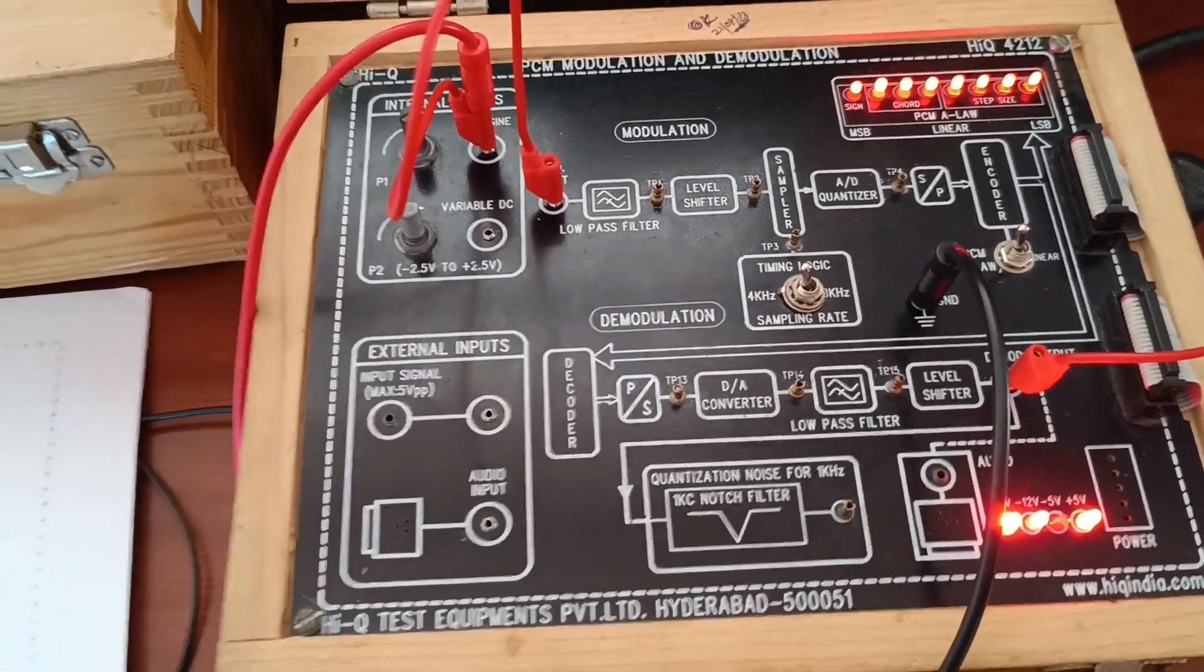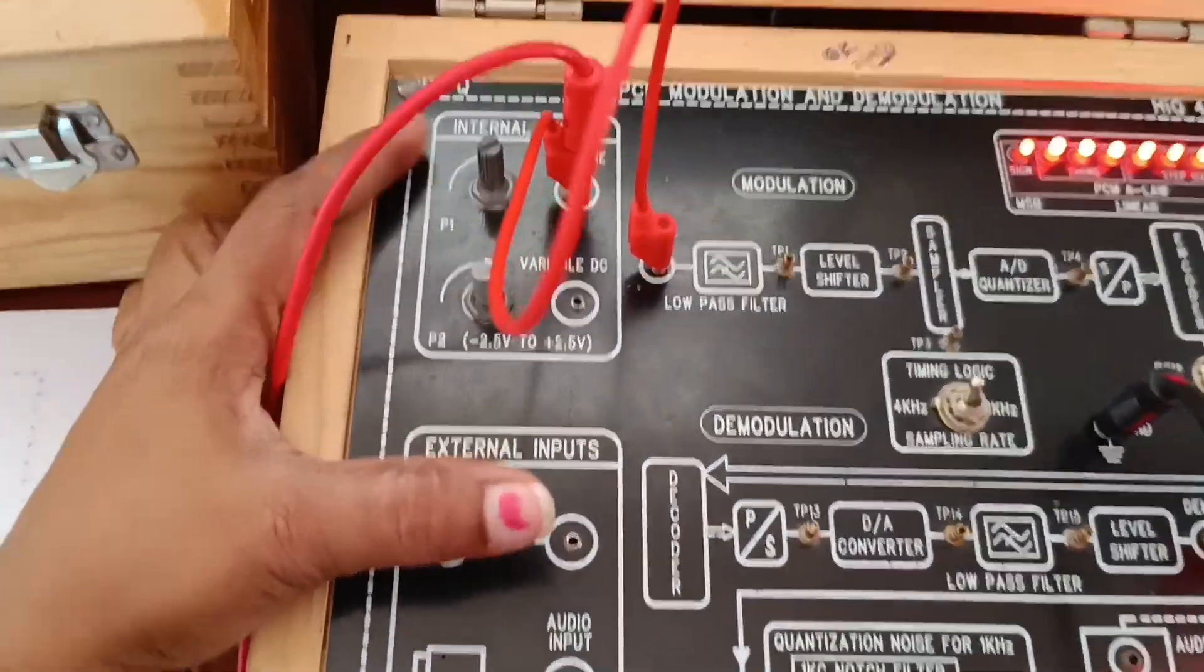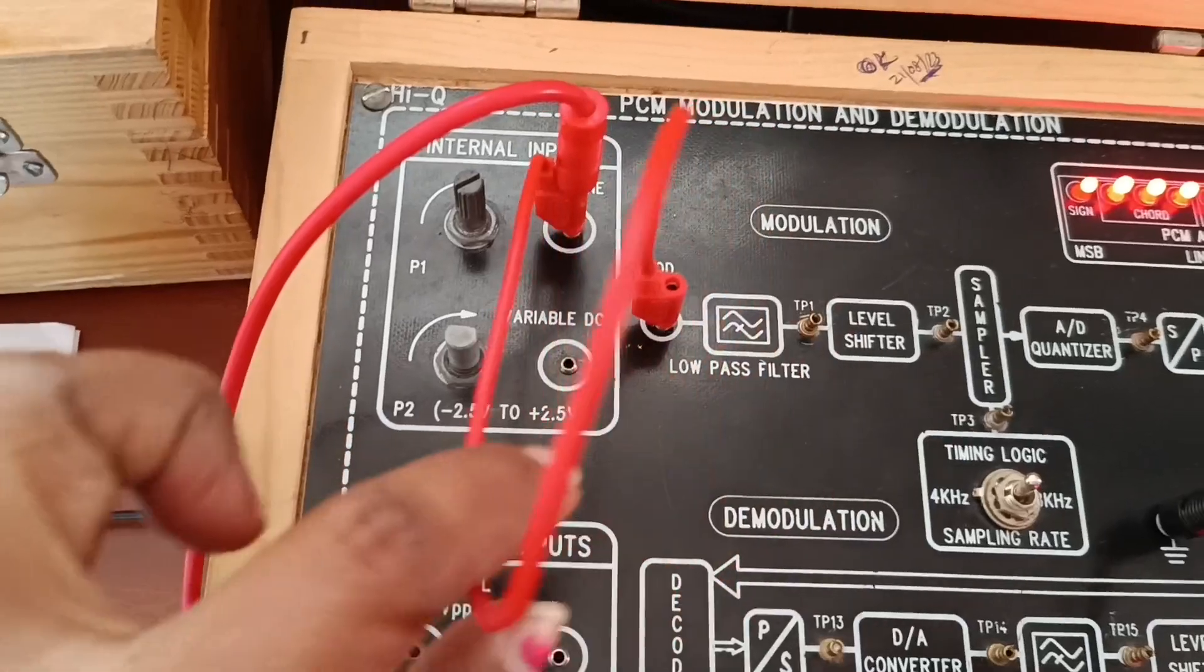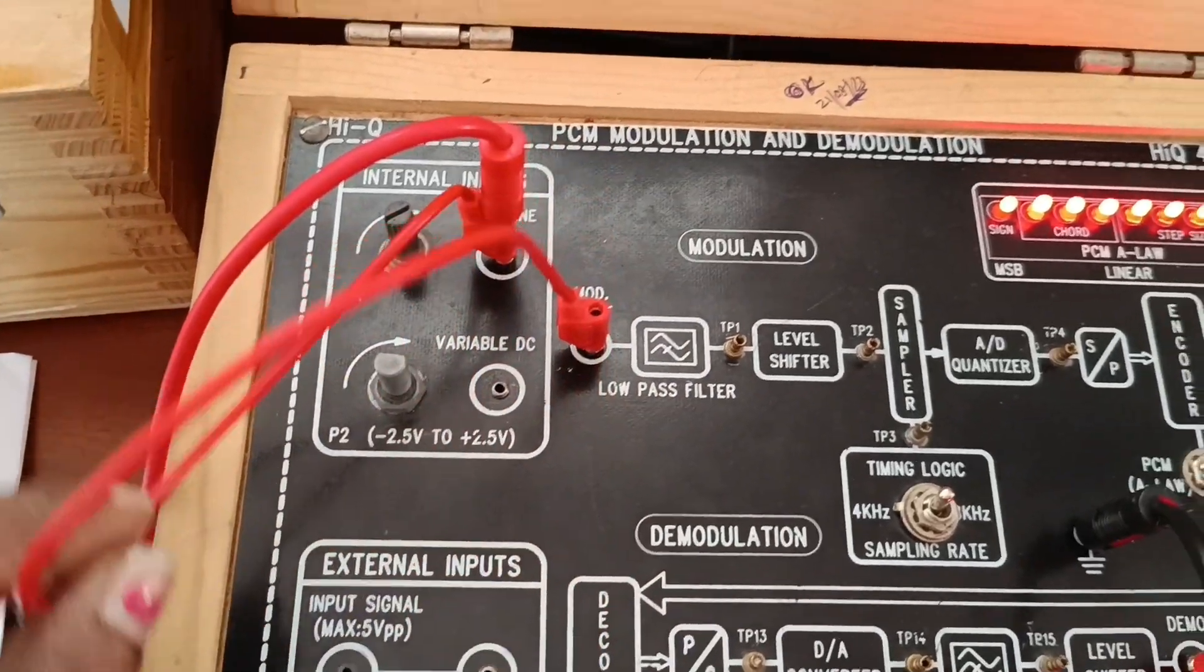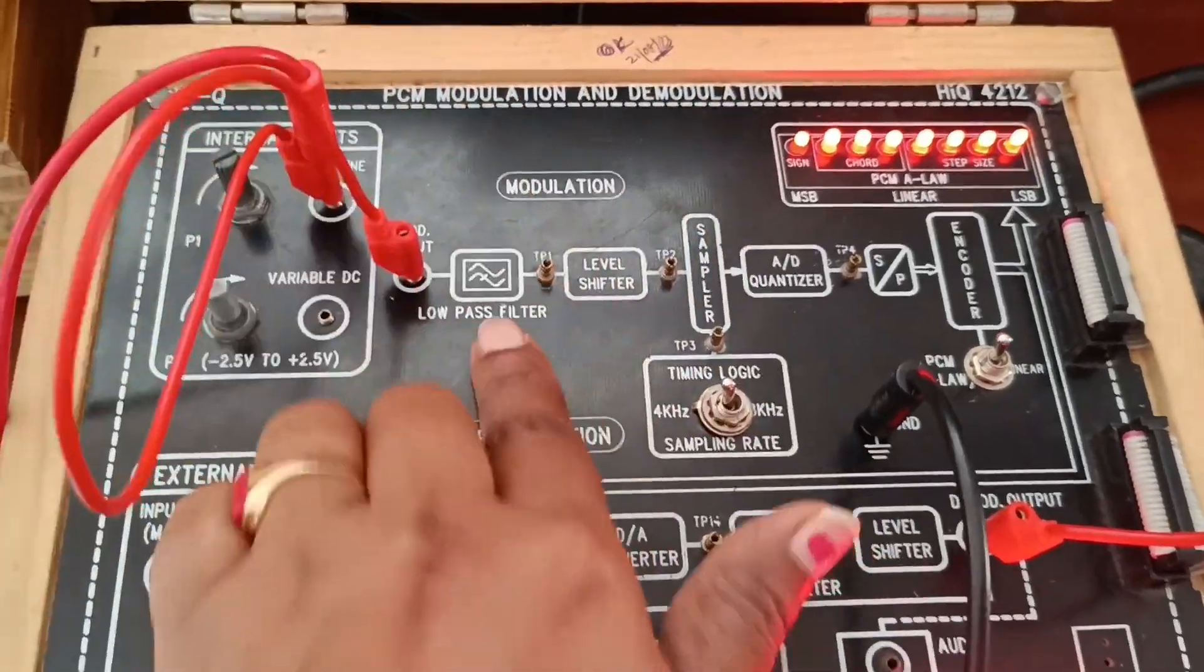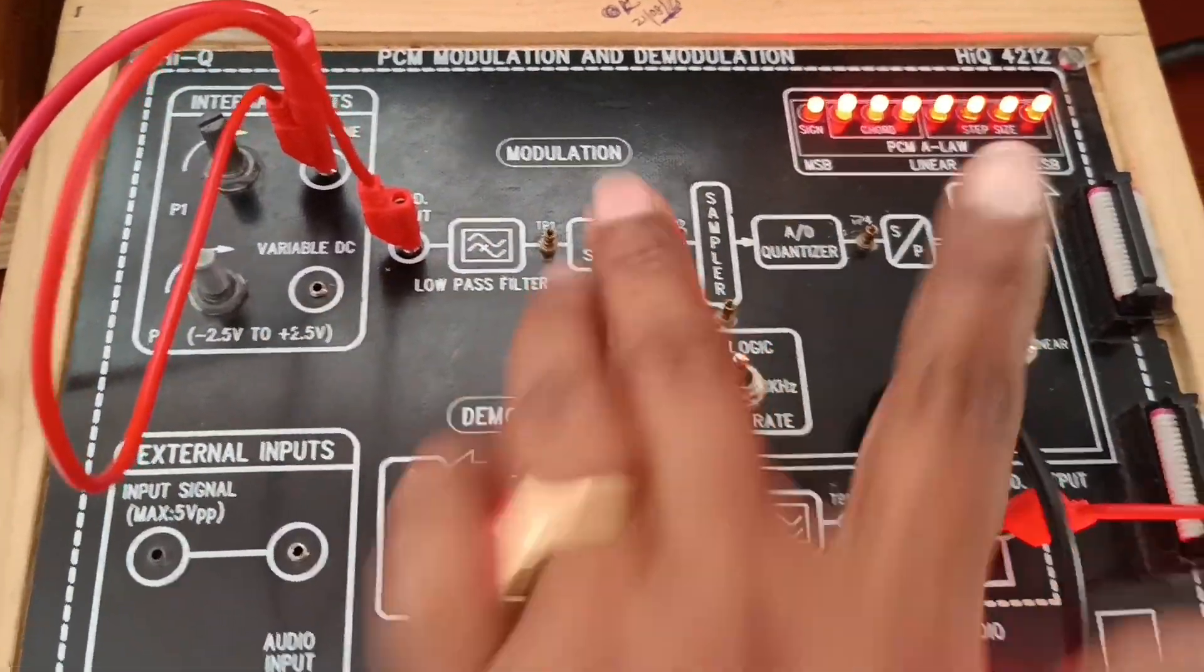If you observe here, this is the sine wave signal generator, function generator block. From here we are applying 1 kilohertz and 2 volts signal. Next this is the block diagram of PCM, Pulse Code Modulation block diagram.